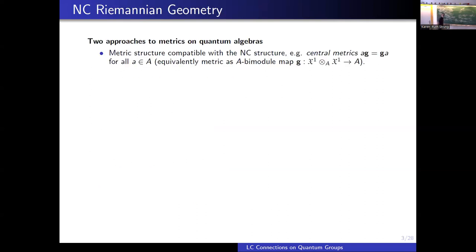In the present work, we will clarify these two points and take a specific approach. Let me start by describing the literature according to how the metric is considered on quantum algebras. When you take a round sphere, like the 3-sphere group, what is the metric you would like to take? The first thing you think of is the round metric.